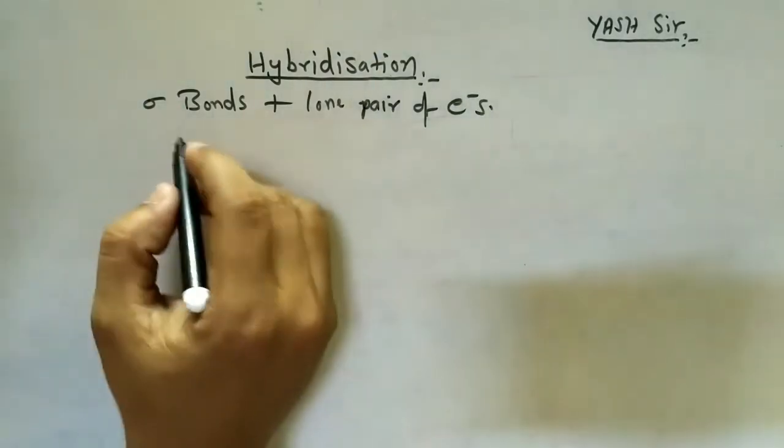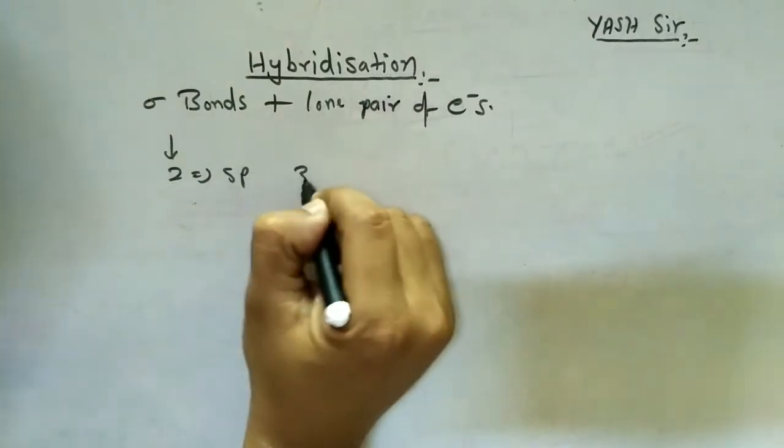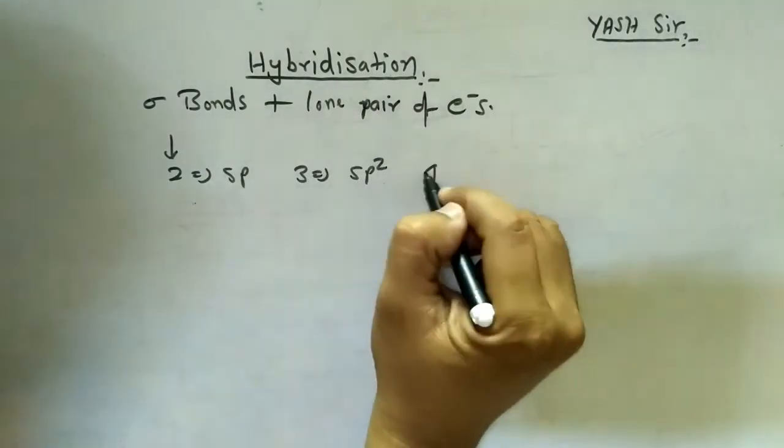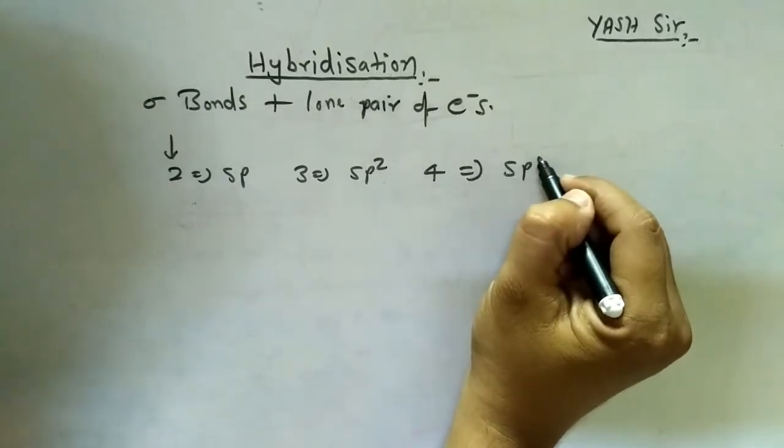If the total number is 2, hybridization will be sp. Total number is 3, hybridization will be sp2. If total number is 4, hybridization will be sp3.